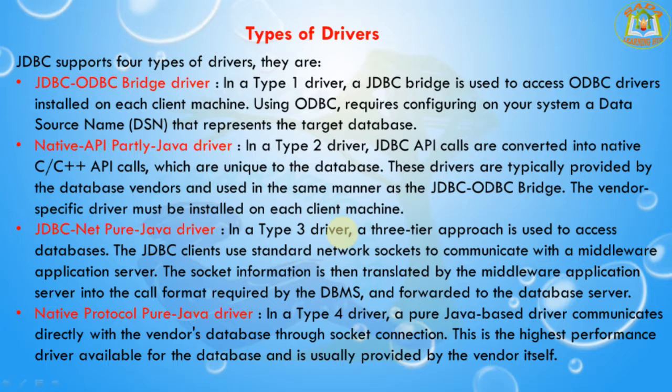The JDBC Net Pure Java driver is also known as a Type 3 driver. A 3-tier approach is used to access the database. The JDBC clients use standard network sockets to communicate with a middleware application server. The socket information is then translated by the middleware application server into a call format required by the DBMS and forwarded to the database server.